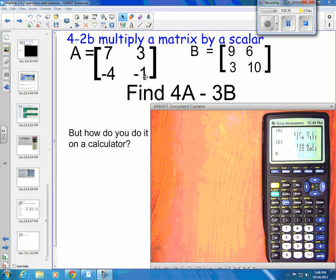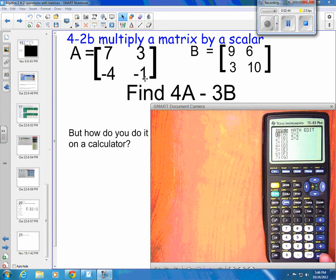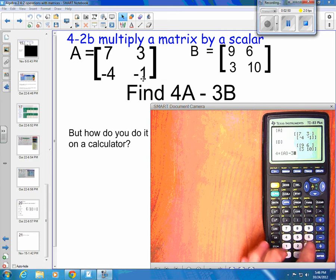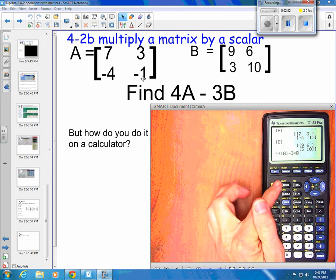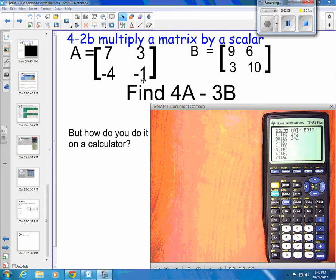Now, if I want to do this operation, I want to take 4, and I want to multiply it by my matrix A, so I'm going to grab 2nd matrix and the 1st one, so 4 times A, and then I'm going to subtract, and I'm going to take 3 times 2nd matrix, and come down and grab B, and so now I've got 4 times A minus 3 times B. Whenever I press enter, I get the same answer that I had before.